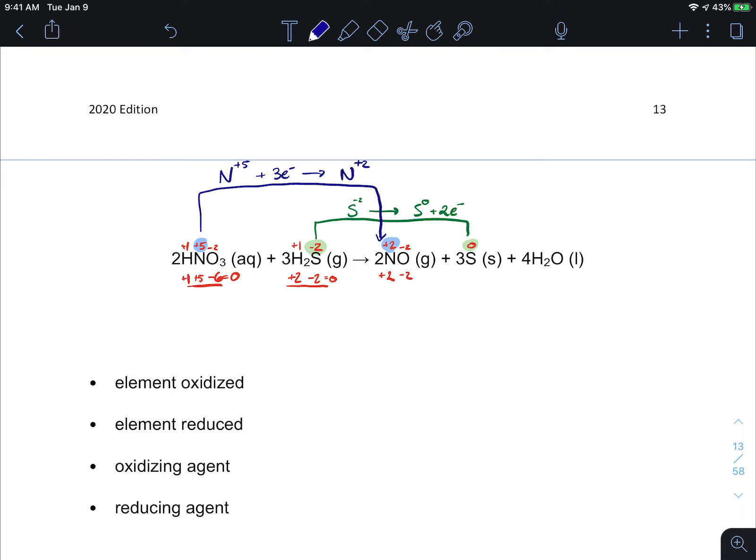Okay so the element that is oxidized. Which element did the number go up? Well from sulfur minus two to sulfur zero that element went up. So sulfur is the element that increased. It went from minus two to sulfur zero. Which element was reduced? The nitrogen which went from plus five to nitrogen plus two.